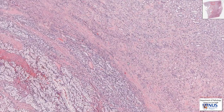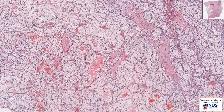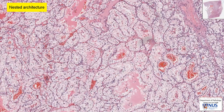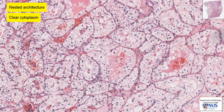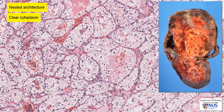Moving on to the tumor, we can see that it has a very nested architecture — very well-defined nests with delicate vessels in between. Within the nests, we can see that the cells are polygonal, there is abundant clear cytoplasm, and this is filled with glycogen as well as lipid, which gives the tumor this very bright yellow golden appearance grossly.